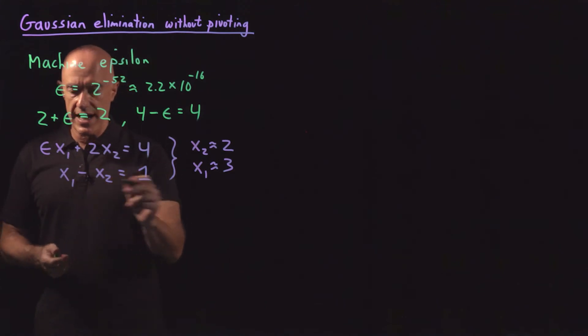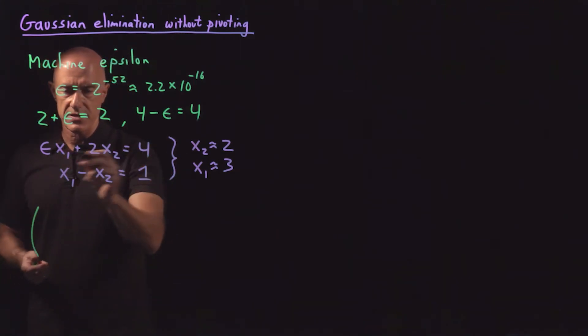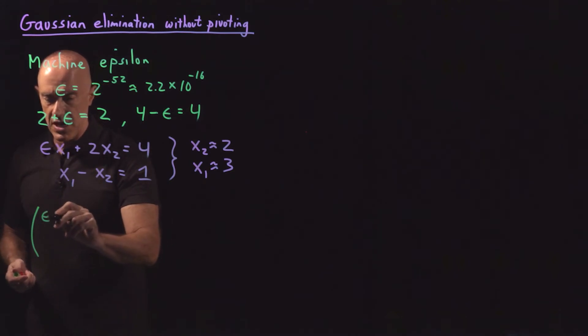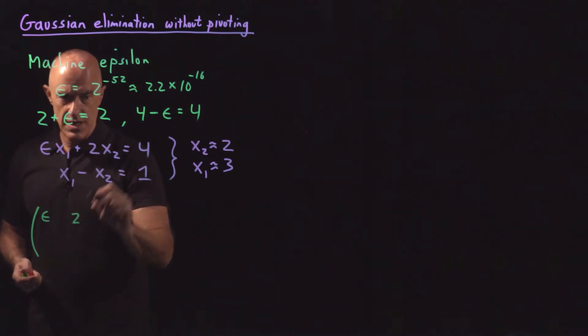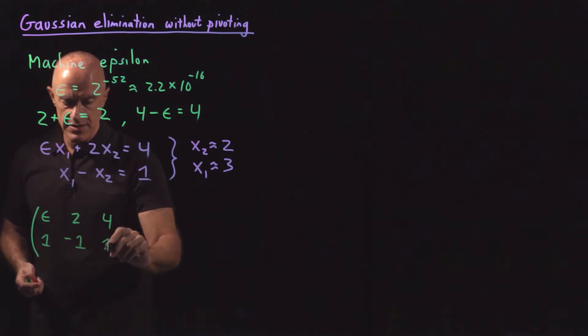So remember how to do Gaussian elimination. We set up the augmented matrix. So we have an epsilon and a 2 and then a right-hand side 4. And we have a 1 and a minus 1 and a right-hand side 1.